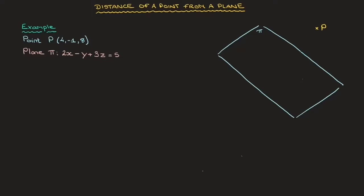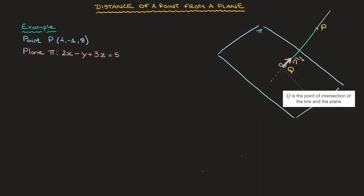The distance of P from this plane is equal to the distance from the point P to its perpendicular projection, which I'll call Q, on that plane. Because point Q is the perpendicular projection of point P onto this plane, the line segment QP is perpendicular to this plane. I'll draw a normal to the plane in pink and call it N, with a right angle marked. So the distance of point P from the plane can be thought of as the length of line segment PQ.